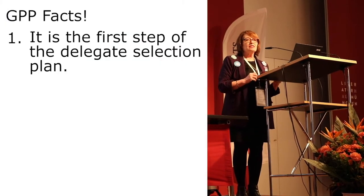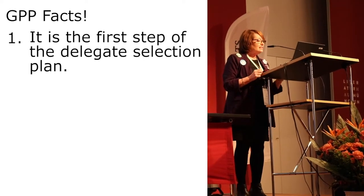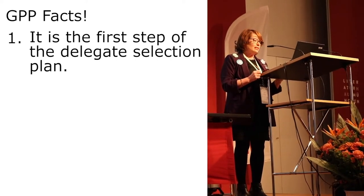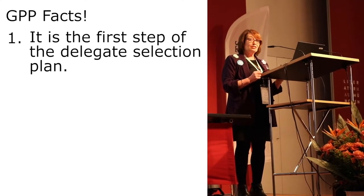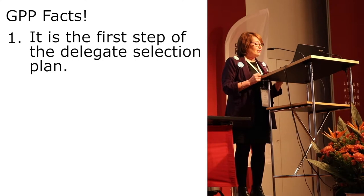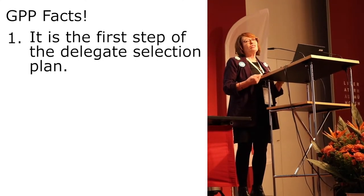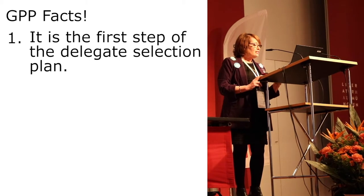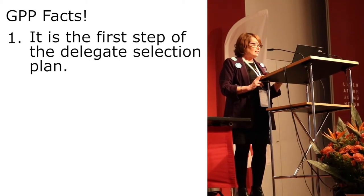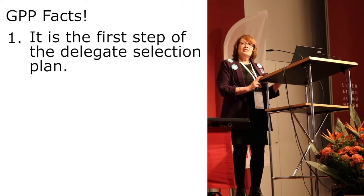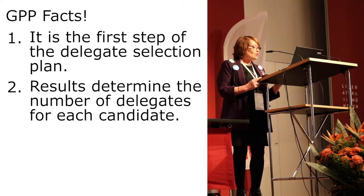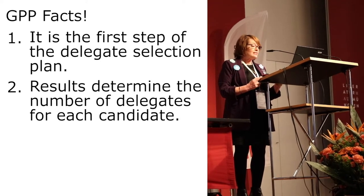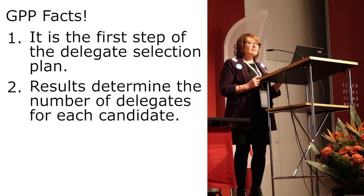The Global Presidential Primary is the first step in the delegate selection plan. DA is an official state party of the Democratic National Committee, and we get to send delegates to the Democratic National Convention. They help determine who our presidential candidate or nominee will be. We have eight automatic delegates: our international chair, our vice chair, along with six DNC members.